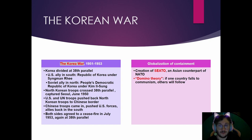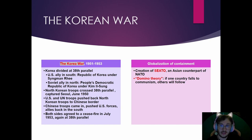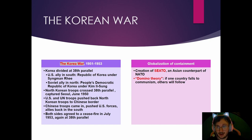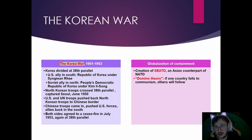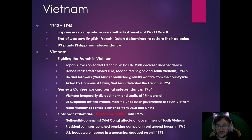America was afraid of countries becoming communist — this is the idea of containment. If one country falls to communism, the rest will fall too. This is the so-called domino theory: like lining up dominoes and knocking one over, they all fall down. America was afraid that if Vietnam or Korea fell to communism, Japan would fall next, then all of the Pacific, and communism would spread everywhere. So the United States felt it had to stop communism.